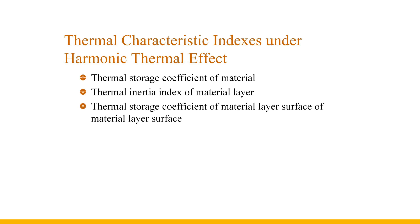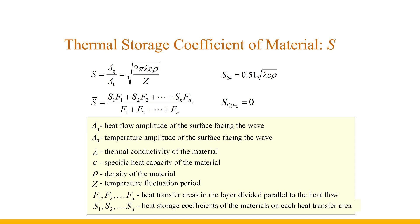The thermal characteristic indices of material and enclosure structure under harmonic thermal effect mainly include: the thermal storage coefficient of material, the thermal inertial index of material layer, and the thermal storage coefficient of the material layer surface. The heat storage coefficient of a material refers to the ratio of the heat flow amplitude received by the surface to the temperature amplitude of the surface. For a homogeneous semi-infinite flat wall subjected to harmonic heat on one side, it is a function of thermal conductivity, specific heat capacity, density, and temperature fluctuation period.